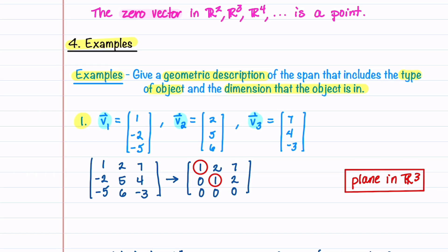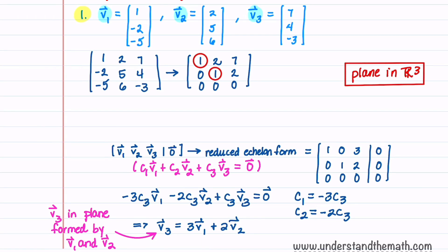This plane in R3 is formed by vectors V1 and V2. To see how V3 can be written in terms of V1 and V2, we form the equation C1·V1 plus C2·V2 equals V3 and augment a matrix with zero. We put that matrix in reduced echelon form, circle our pivots, and solve for C1 and C2. Putting those values back into our equation and solving gives a vector equation for V3 in terms of V1 and V2, showing that V3 is in the plane formed by V1 and V2.